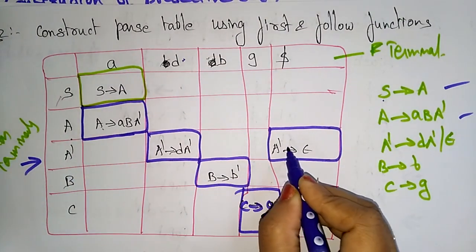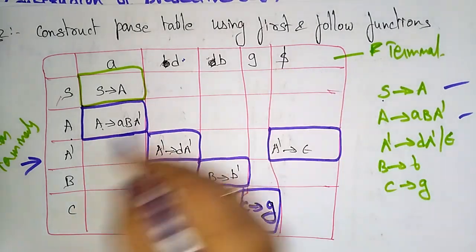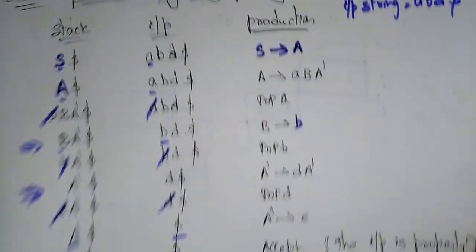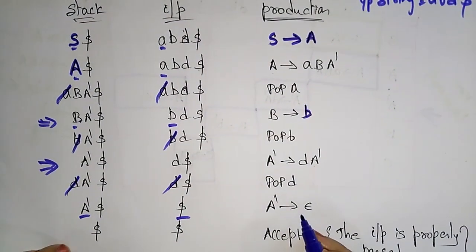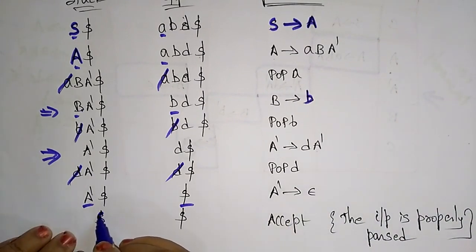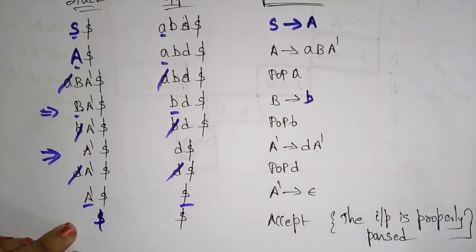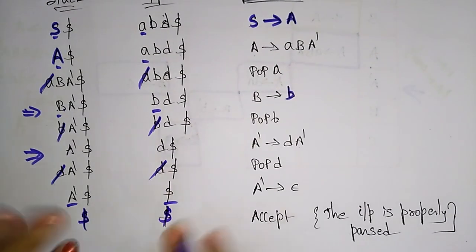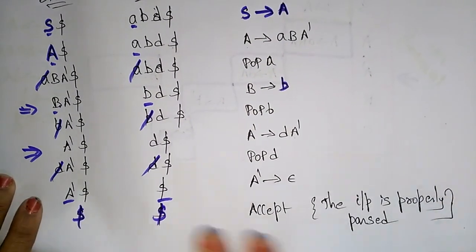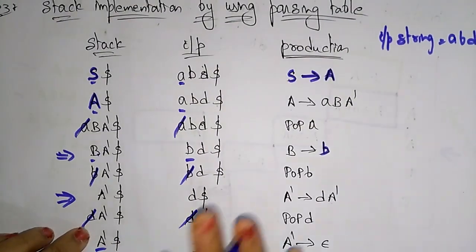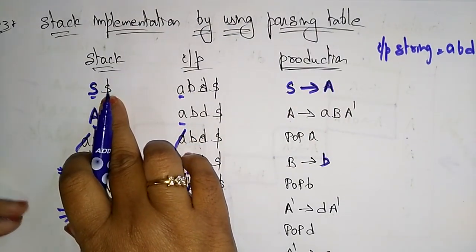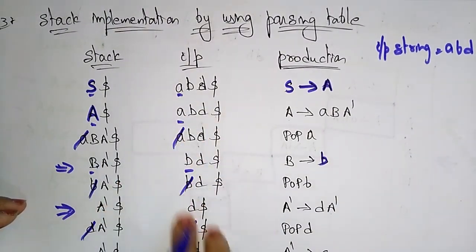Stack: [A', $], input: '$'. A' and '$' → production A'→ε. Epsilon is an empty string, so just write '$'. Now stack: [$], input: [$]. Dollar matches dollar, so the input is accepted. This is how you implement the stack by seeing the parse table — take the starting symbol and the input string you need to parse.